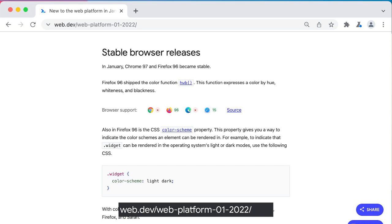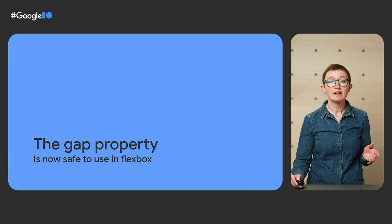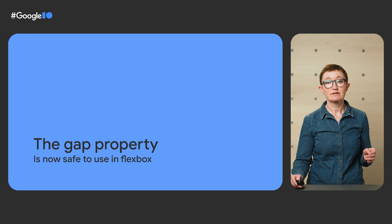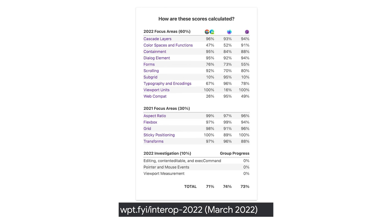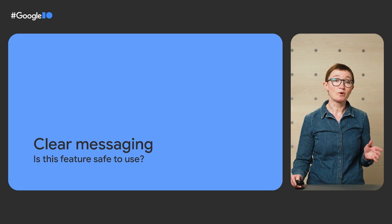We're trying to be clearer when something is experimental in Chrome, currently only available in Chrome, and when it's ready for you to use because it's supported everywhere. The Flexbox Gap feature is now something that's safe for you to use — it's available in all evergreen browsers. We hope that by the end of this year, you'll be seeing an improvement in all of these areas we're focusing on, along with our colleagues at the other browsers, through the Interop 2022 project. And because there will always be something of a gap, even if it's a smaller one, we're working to ensure that our messaging is clear when we talk about features. We want you to enjoy building for the web and to have fewer frustrations, so our aim is to fix the gaps and to be clear and honest about the places where they still exist.